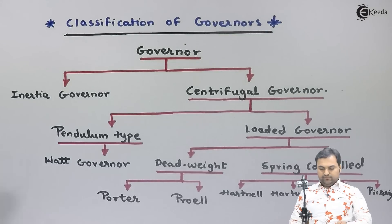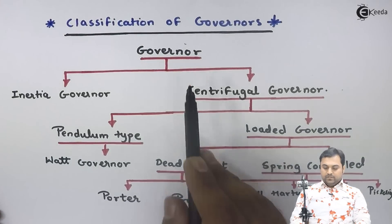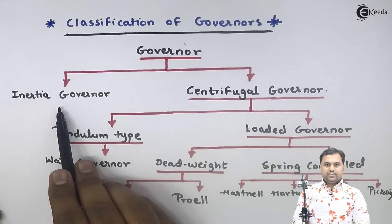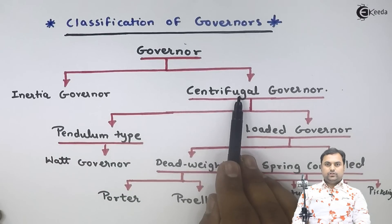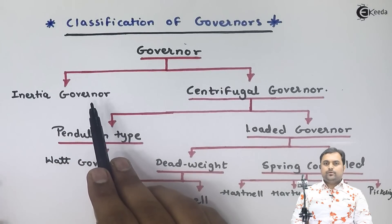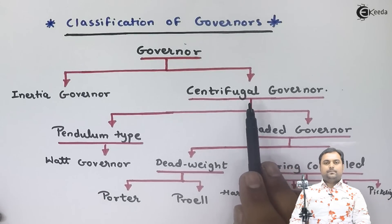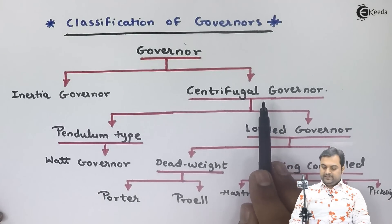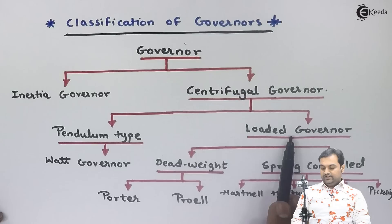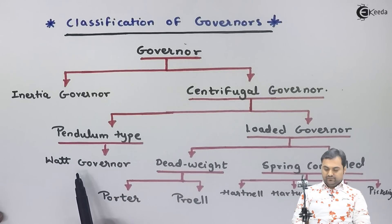Let us see the classification of governors. A governor is classified broadly into two types: inertia governor and centrifugal governor. Inertia governors are not used because of their huge amount of mass or weight. Centrifugal governors are preferred because they are light in weight. In centrifugal governors, they are classified as pendulum type and loaded governor. In pendulum type, we have the Watt governor.